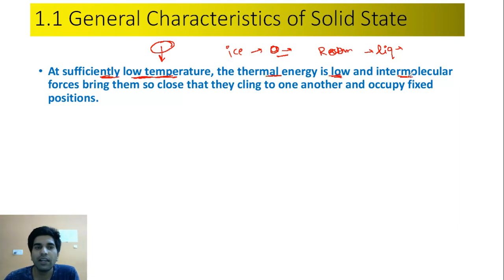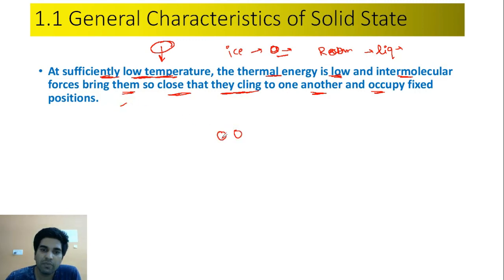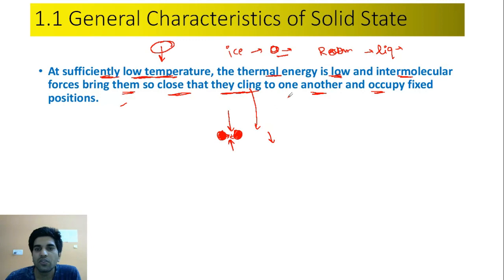At sufficiently low temperature, thermal energy is low and intermolecular forces bring particles so close that they cling to one another and occupy fixed positions. Thermal energy बहुत कम होगी और particles बहुत strongly attracted होंगे — they are very close to each other and cling to one another, occupying fixed positions.